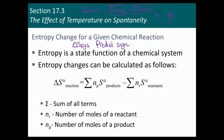We can predict the sign of delta S of the system in a lot of processes — not always, but a lot of the time. When you go from solid to liquid to gas, delta S of the system is positive. When we go from a salt as a solid and dissolve it in water, delta S of the system is increasing. For a lot of processes, we can look at them and determine the sign of delta S of the system.